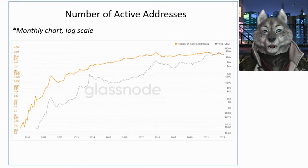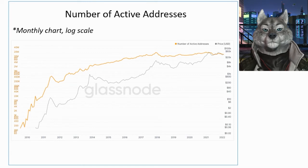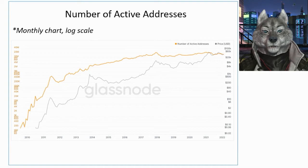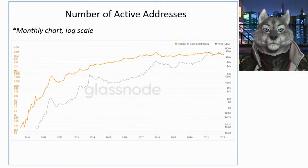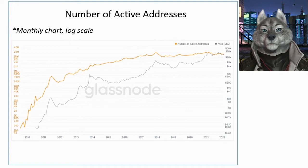It is a good idea to analyze longer graphical periods such as the monthly graph. I have shown here graphs generated by the Glassnode platform, and at the end of this series I will give a hint of places where you can find on-chain indicators on free and paid platforms.